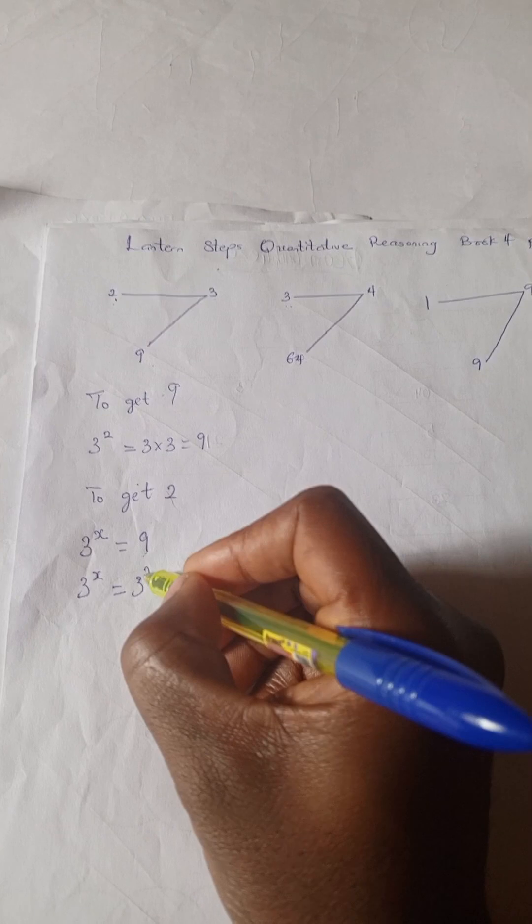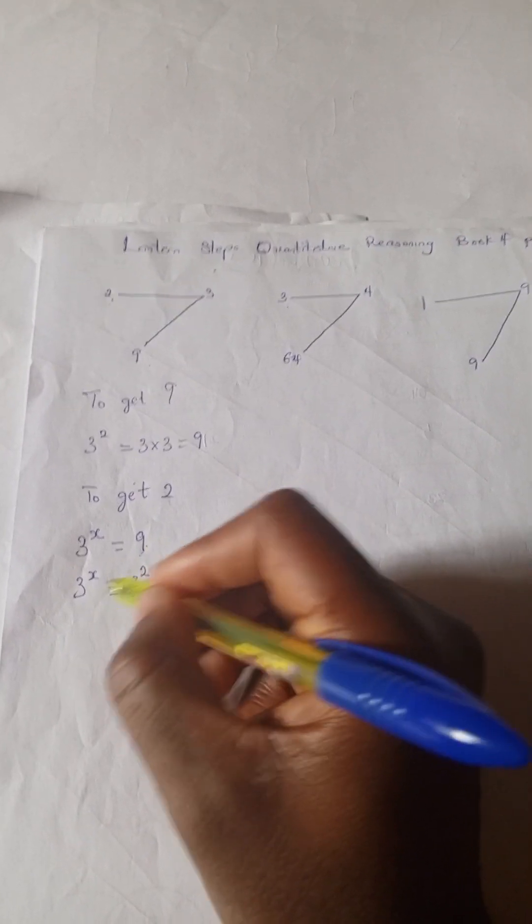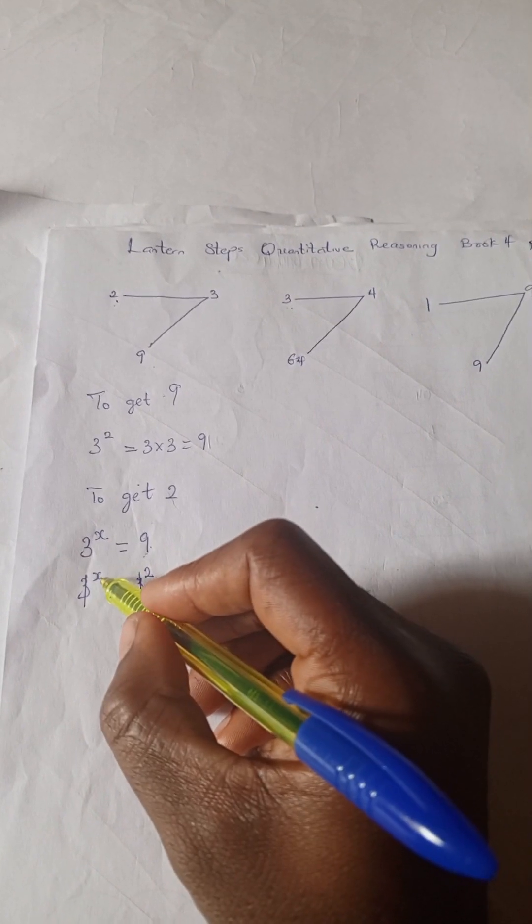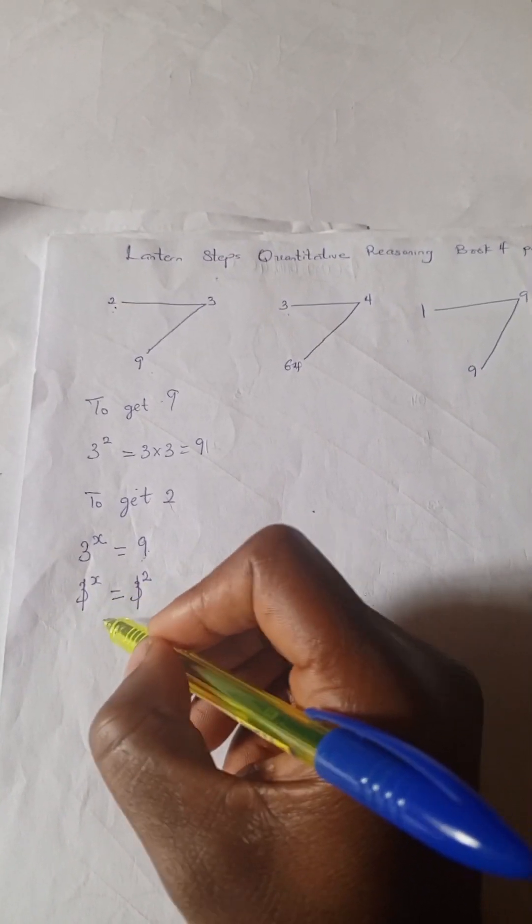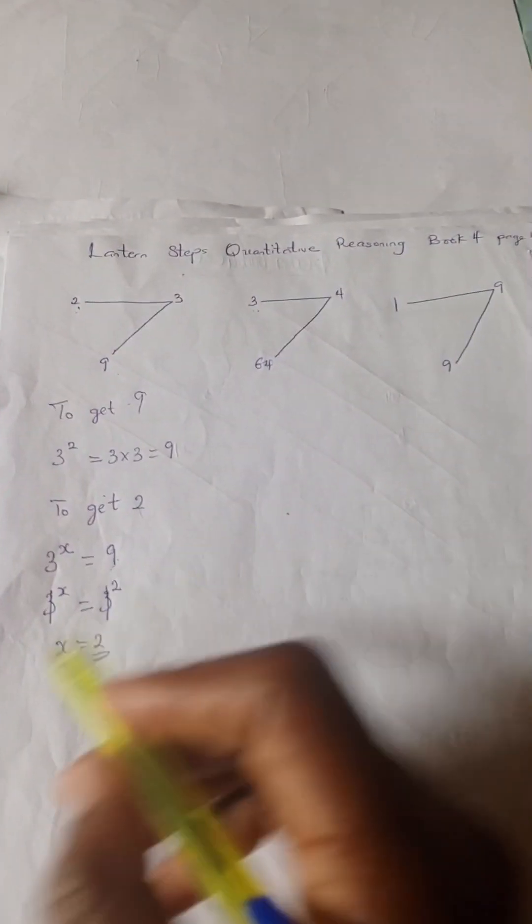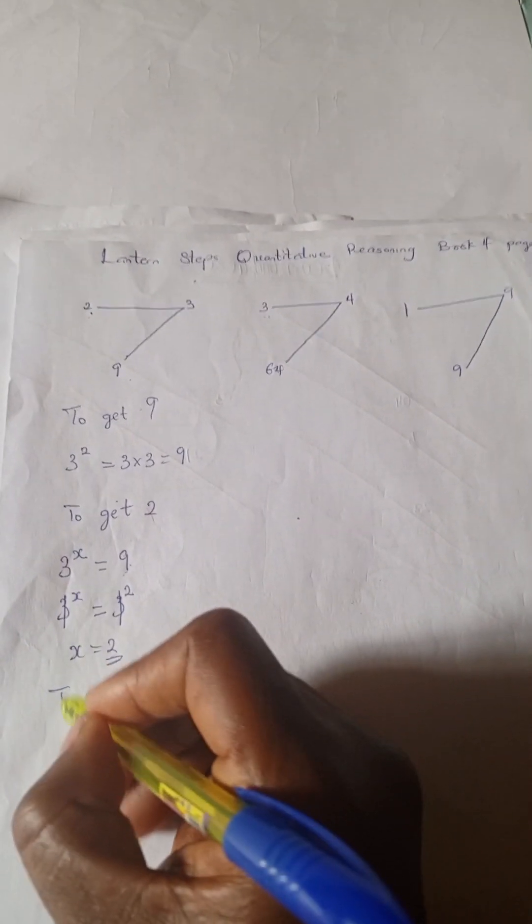So 3 into 2 places would give us this 9. So we're going to cancel out these, 3 will cancel out each other and we are left with x equals 2. So we have our 2.